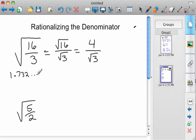So if you were to apply the division algorithm without a calculator, 4 divided by 1.732 dot, dot, dot is pretty impossible to do without approximating the 1.732.